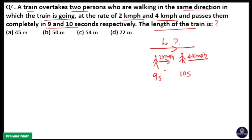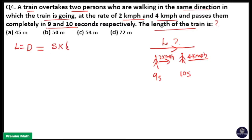A train of length L passes two people in 9 seconds and 10 seconds respectively, and the speed of these two persons is 2 km per hour and 4 km per hour. Here the length of the train is equal to distance itself, because there is no other platform or any other train. So length of the train equals distance, and distance equals speed into time.